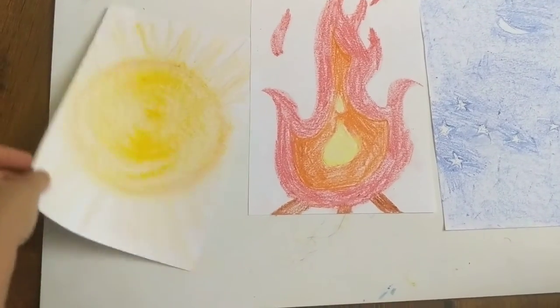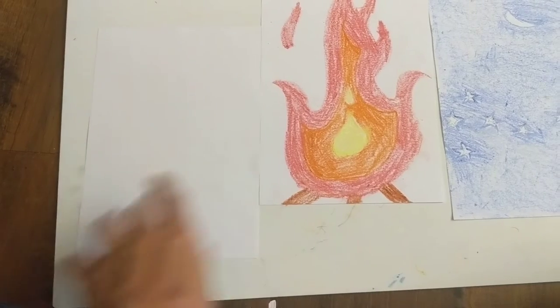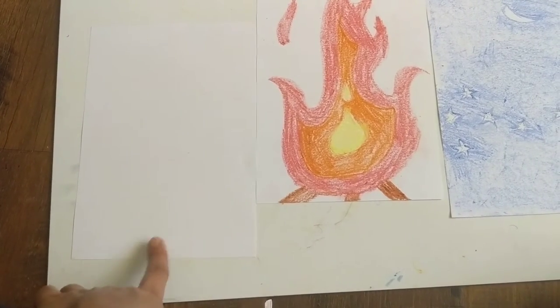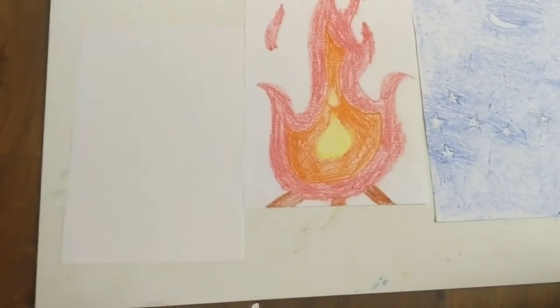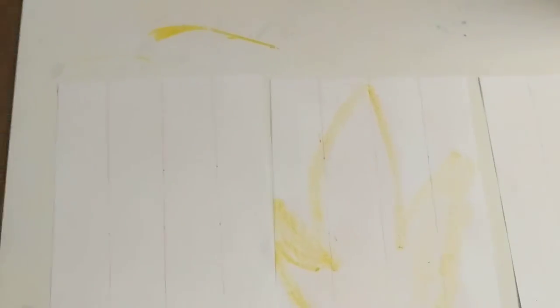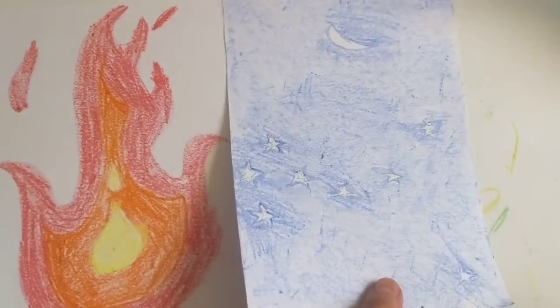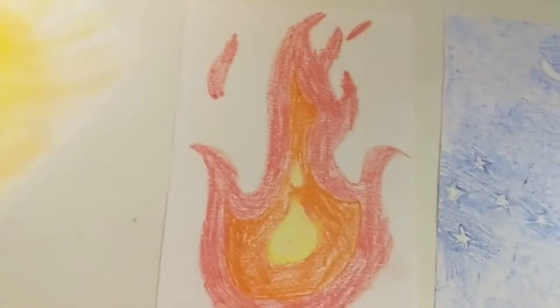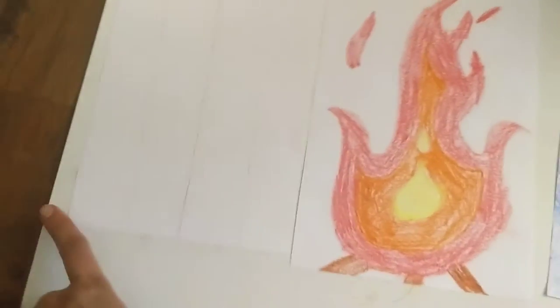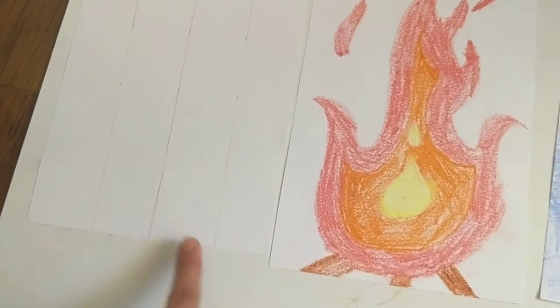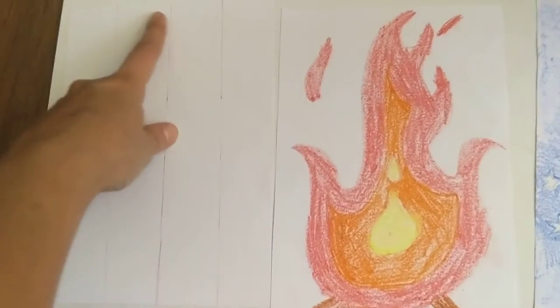Now what I'll do is on the backside I will mark off one and a half inches. Here are the three images: the sun, the fire, and the night sky. Turn it back and mark off every one and a half inches on both sides of the sheet.